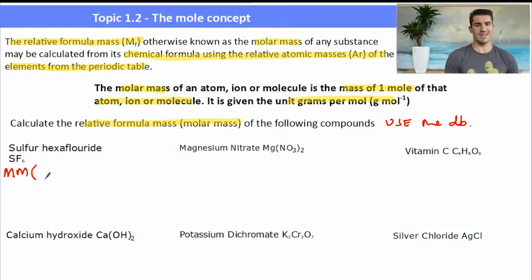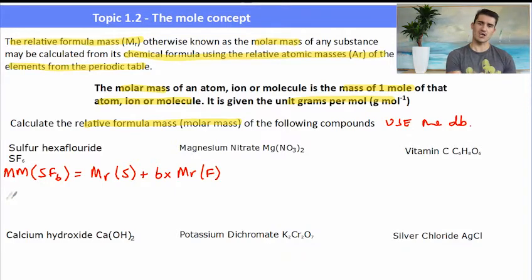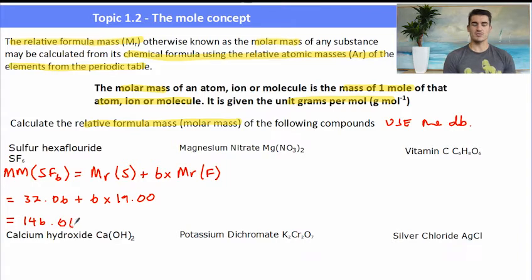So sulfur hexafluoride, SF₆. I tend to write molar mass as MM. To calculate it, we look up the relative molecular mass of sulfur and then we plus that to six times the relative atomic mass of fluorine. From the data book, we can see that the mass of sulfur is 32.06 and then we add that to six times the mass of fluorine, which is 19.00. That gives us the relative formula mass or molar mass, which is 106.06. And if we're calculating the molar mass, it will have units of grams per mole.